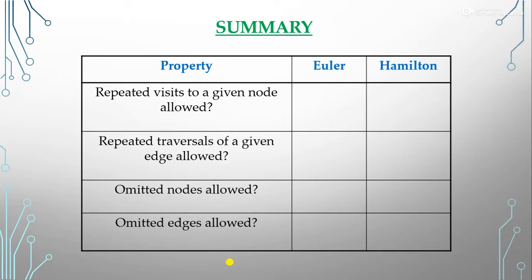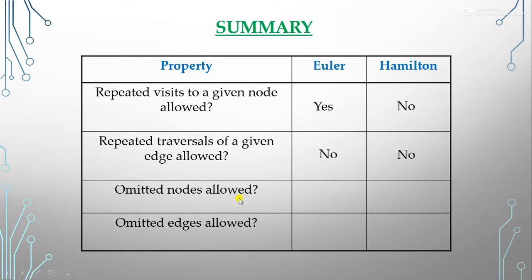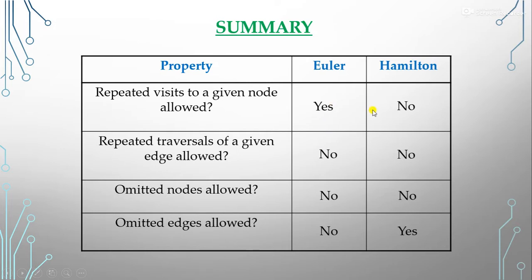Here is a summary comparing Euler and Hamilton: repeated visits to a vertex — allowed in Euler, not in Hamilton. Repeated traversal of edges — not allowed in either Euler or Hamilton. Omitted edges — not allowed in Euler (all edges must be used), but allowed in Hamilton (we can skip edges to cover all vertices).